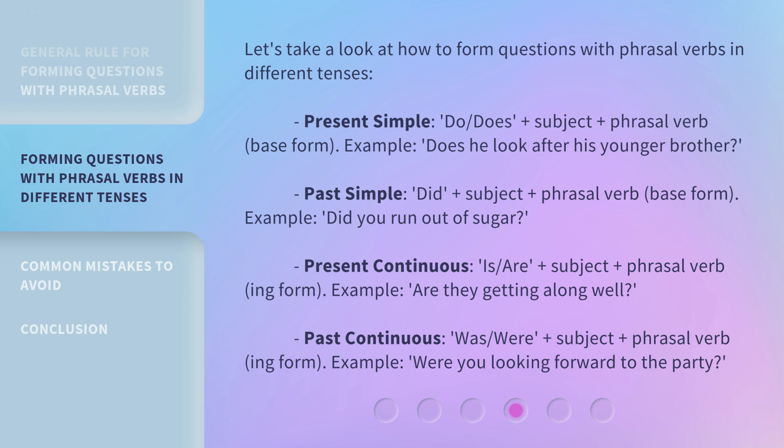Past continuous: was/were + subject + phrasal verb (ing form). Example: 'Were you looking forward to the party?'